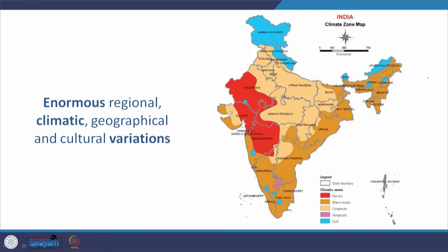There are enormous climatic variations. Looking at India's climate zone map, we have hot and dry, warm and humid, composite — which is the single largest belt — and then temperate and cold. Composite climate itself has five seasons within it, and it is not consistently the same from one part of the composite region to another. There are also variations within it.